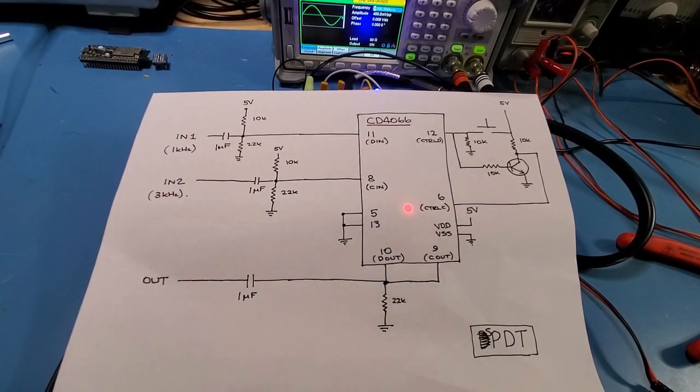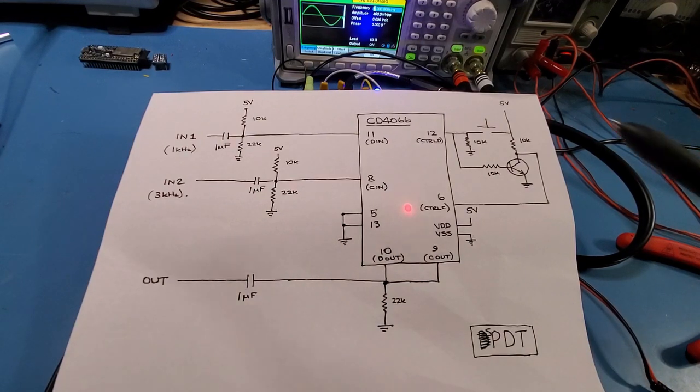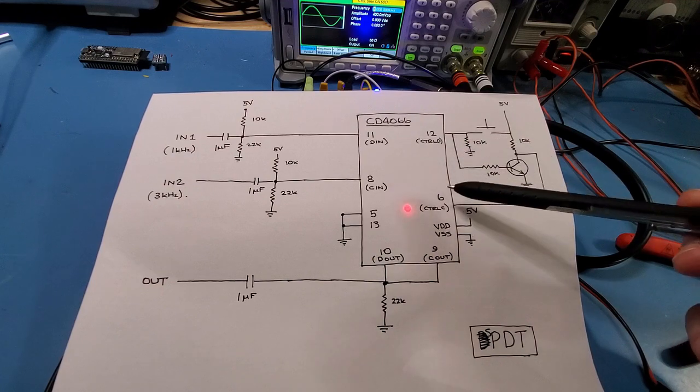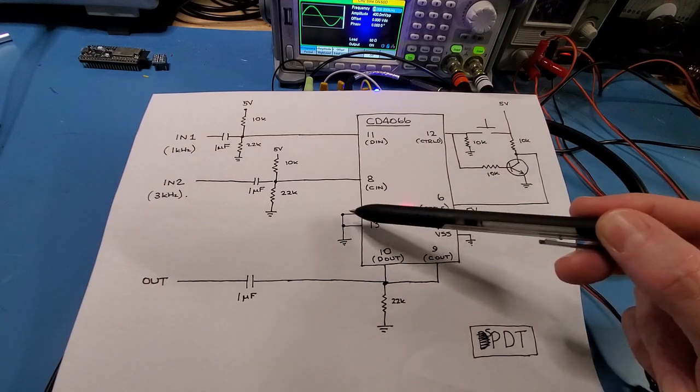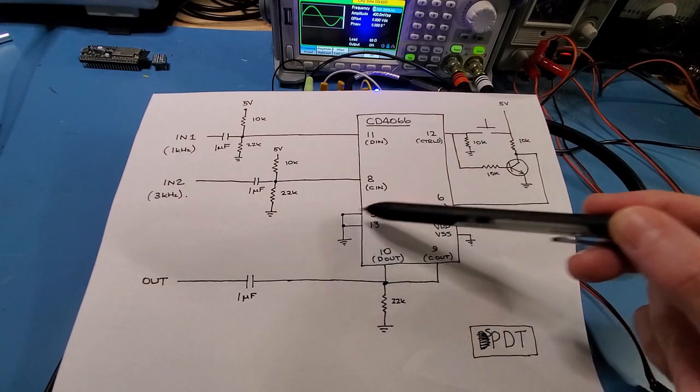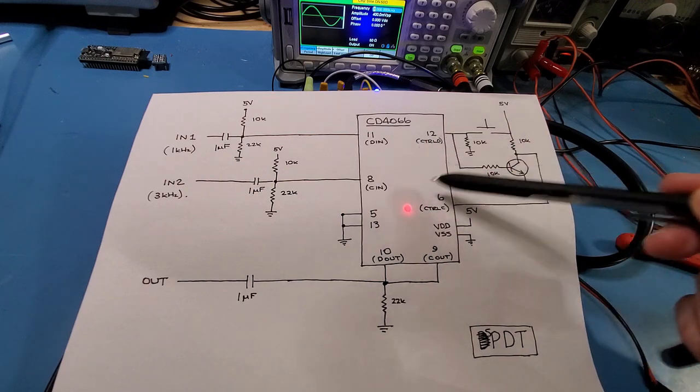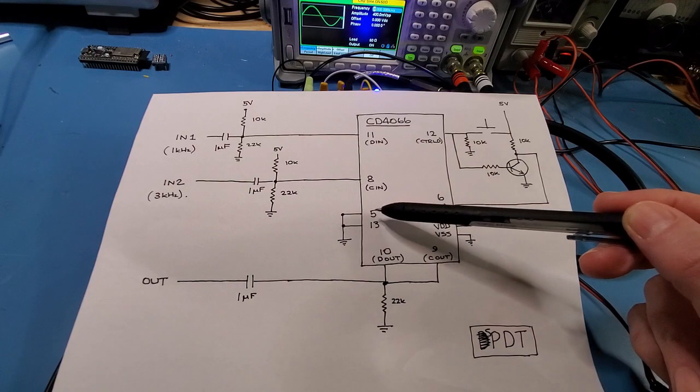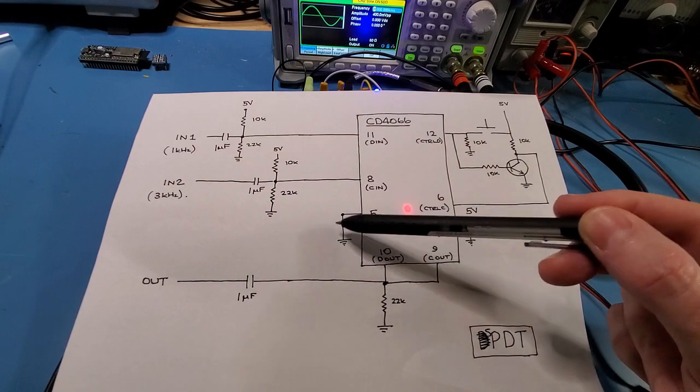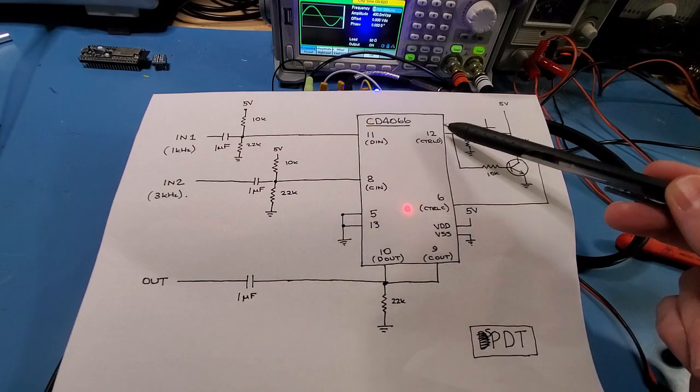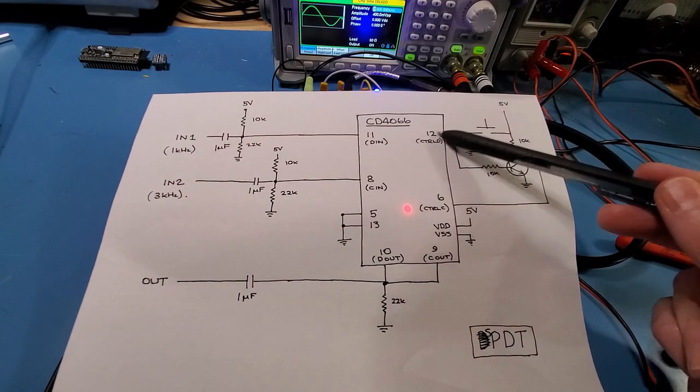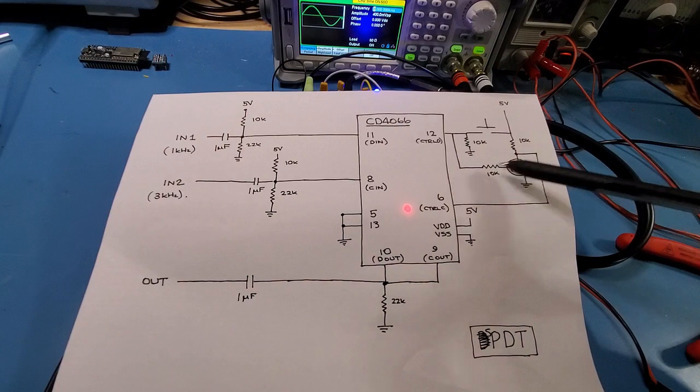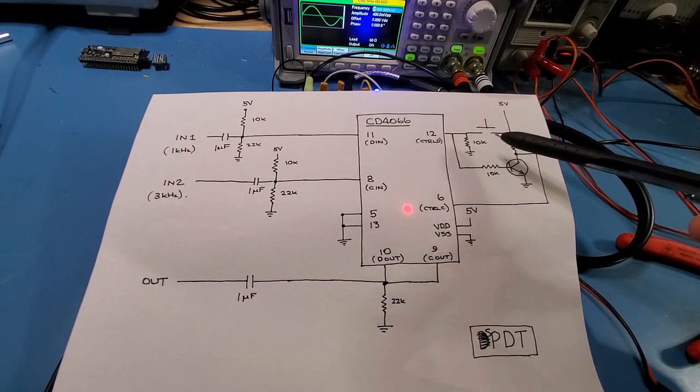Just one quick thing to note if you want to do your own experimentation. Any of these control pins that you don't have connected make sure you tie them to ground. This circuit actually wasn't working until I tied pins 5 and 13 which are the control pins for A and B. If I didn't tie these to ground, this pin here would end up floating at around about 0.6 of a volt which would screw up all this control circuitry here. So anyway, any unwanted control pins tie them to ground.